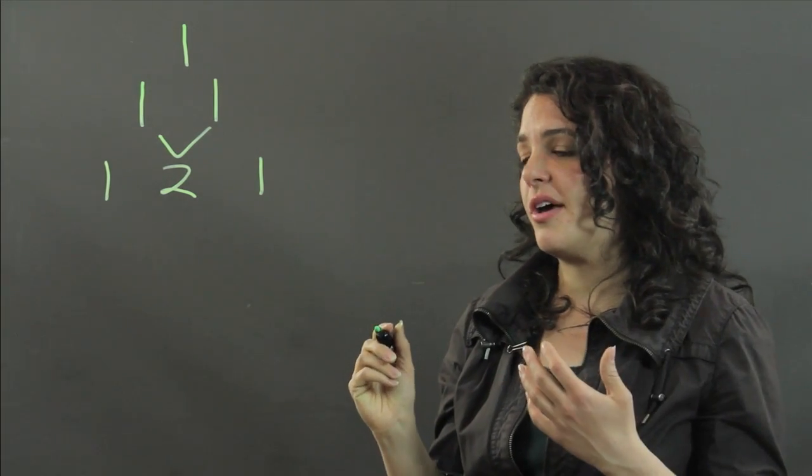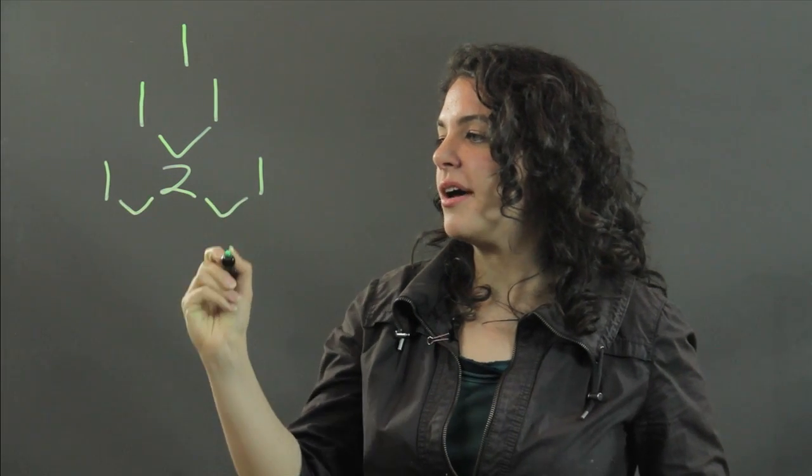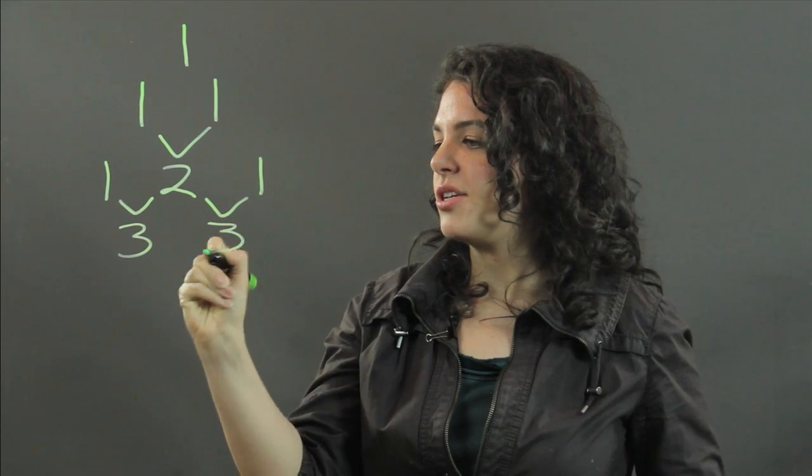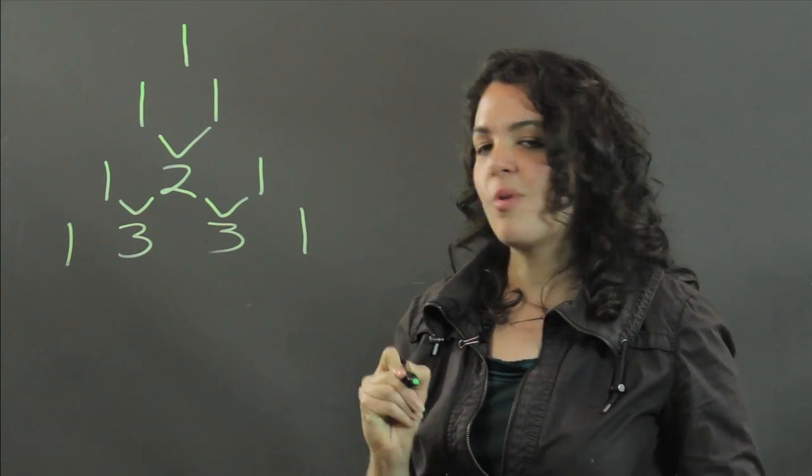Now, to get the fourth line, we add elements from the third line. One and two add to three. Two and one add to three. And then again, we begin and we end with one.